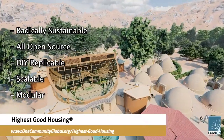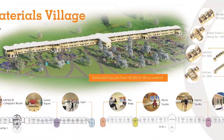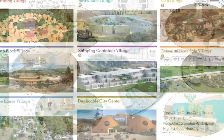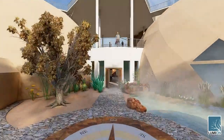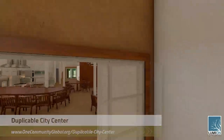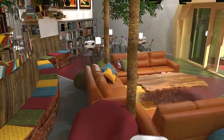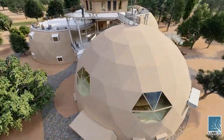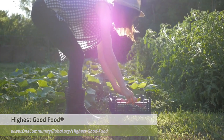The One Community approach to highest good housing is eco-artistic home building that is affordable, sustainable, do-it-yourself duplicable, resource and space efficient, and consists of seven different sustainably constructed village models. One Community is also creating an open source duplicable city center designed to be LEED Platinum certified, provide 12 guest rooms, dining for over 150 people, laundry and recreation space for over 300 people, all while saving money, time, space, and resources.